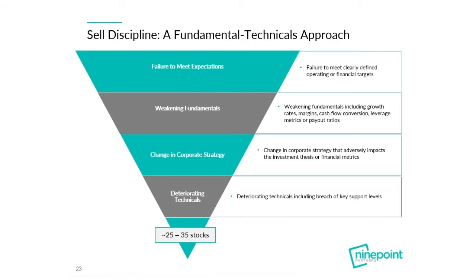The sell discipline is very important for a concentrated portfolio. I use a fundamental and technical approach to decide when to sell. Red flags include failure to meet expectations — when management misses earnings or fails to deliver on promises. Weakening fundamentals such as margins, revenue growth, cash flow conversion, leverage metrics, and payout ratios are also concerning. A change in corporate strategy — like a business leveraging up to buy something outside core competencies — is a concern. I also use technicals: if a position breaks through moving average lines or underperforms on a relative strength basis, I want to replace it with my next best idea.